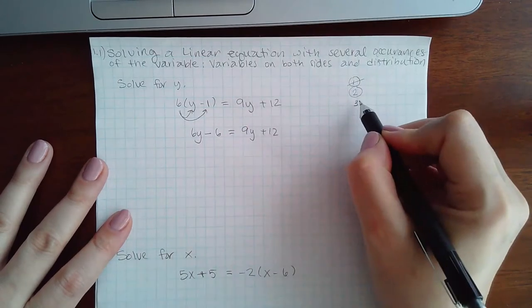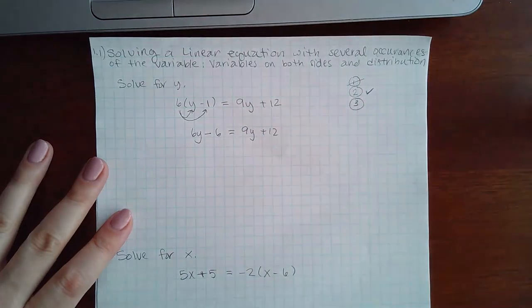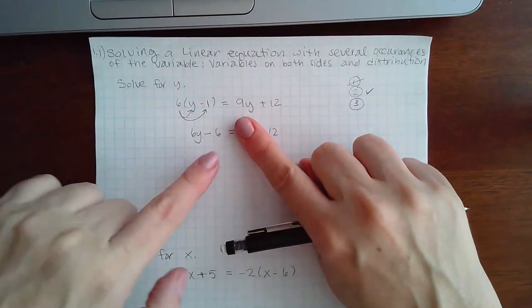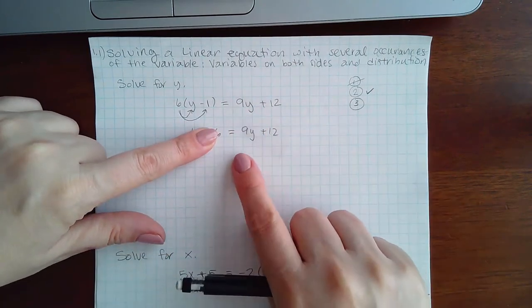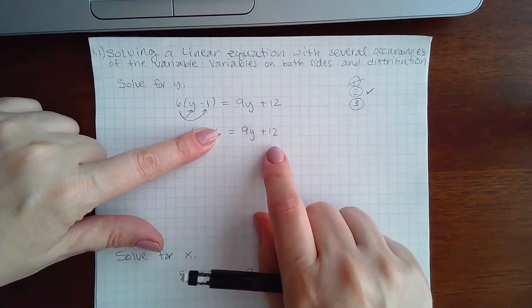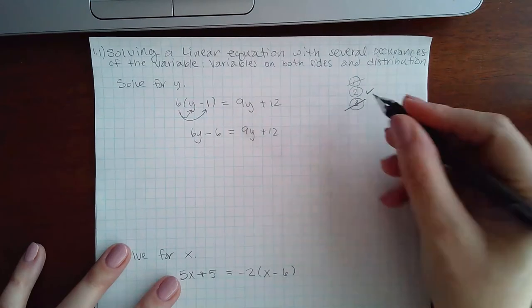Then the third step is to combine like terms. However, on the left-hand side of the equal sign, I do not have like terms. On the right-hand side of the equal sign, I do not have like terms, so I cannot perform this step.